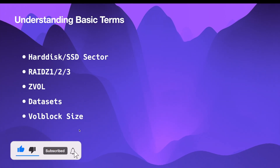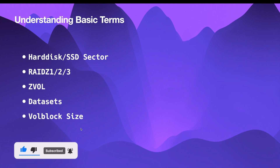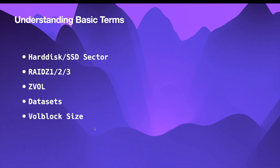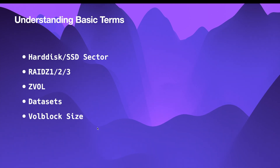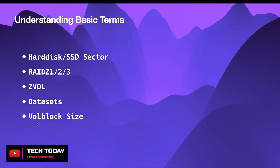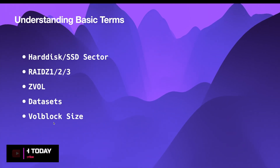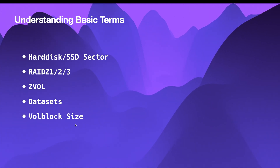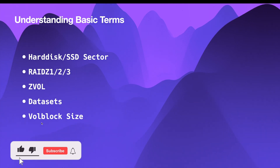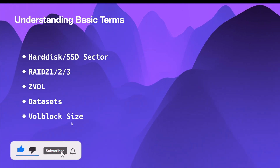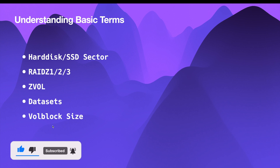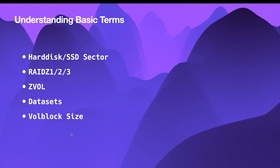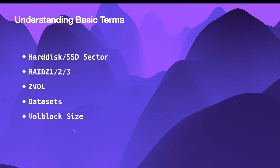If you're running a VM with EXT4 or even NTFS, it doesn't matter what the workload is — EXT4 will always write in 4K chunks, as will NTFS. From my experience, you cannot set the volblocksize using the TrueNAS UI, so you have to use the command line. Once set, you can verify it using the command 'zfs get volblocksize' followed by your ZVOL name, and it will show you the underlying volblocksize.